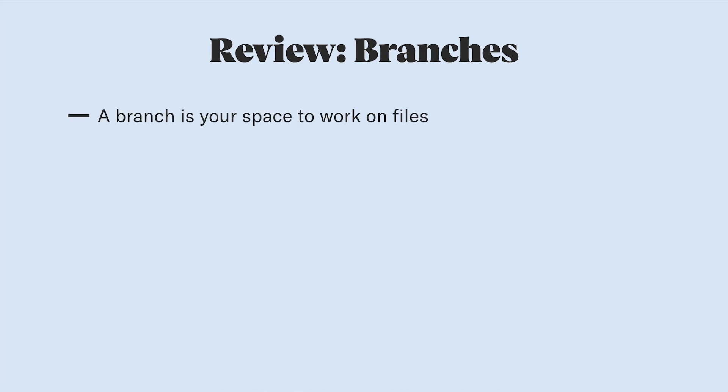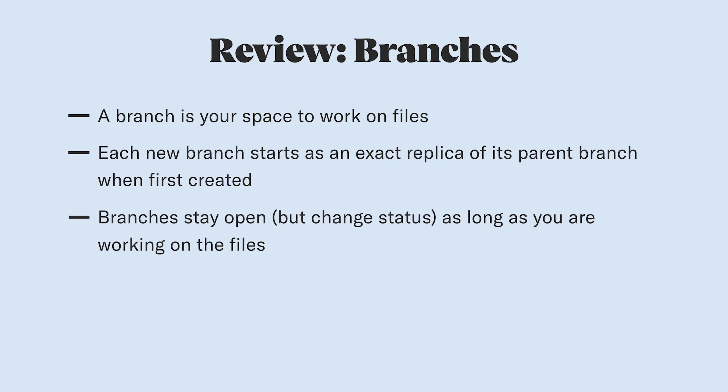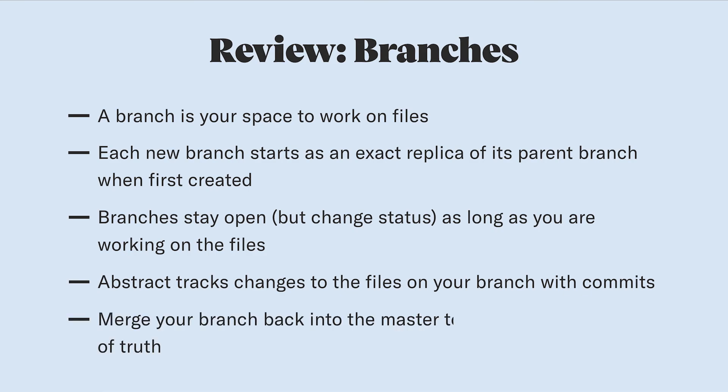To summarize: a branch is a safe space for you to work on a copy of the design files. Each new branch starts as a replica of its parent branch, which is usually the master. Branches stay open while you work on the design files, and Abstract tracks the changes in your files when you make commits. Finally, when you have finalized or gotten approval on the work you've done in your branch, you can close out that work by merging the changes back into the master files.